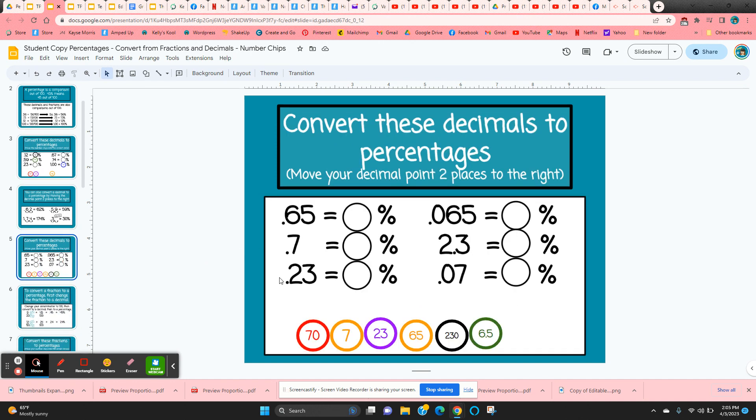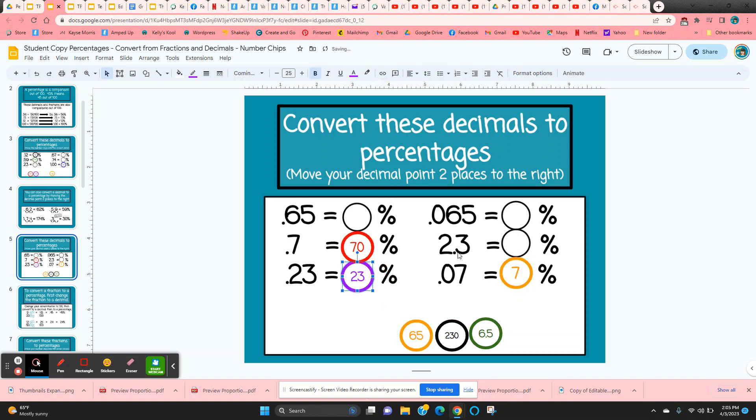So the next slide, they've got a few. They have to really look at it carefully. Particularly this one would be 70% if they add a zero. And this one would be 7%. Is it seven hundredths? So they need to know the difference between those two. This one, 23%. And this one, if we move the decimal point two places to the right, we're going to get 230%.